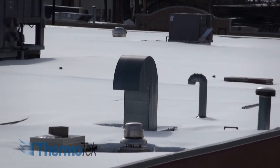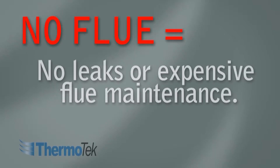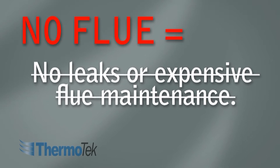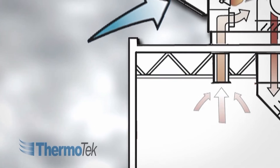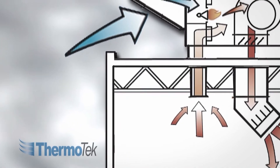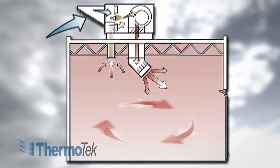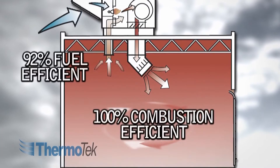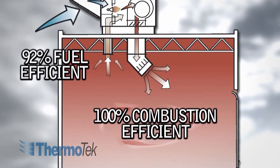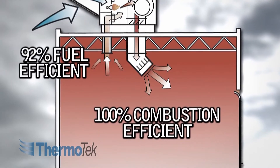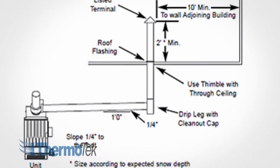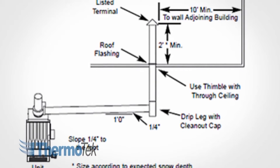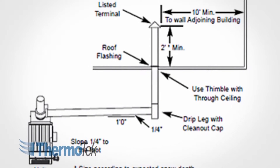No flue through the roof means no leaks or expensive flue maintenance. With its high fuel efficiency and recirculation capability, the total heat system is economical to operate versus other methods employed in the industry today.